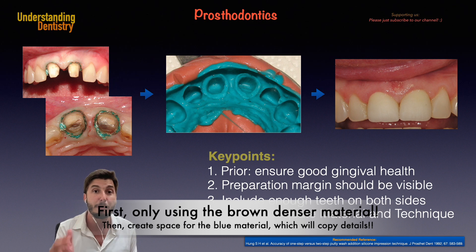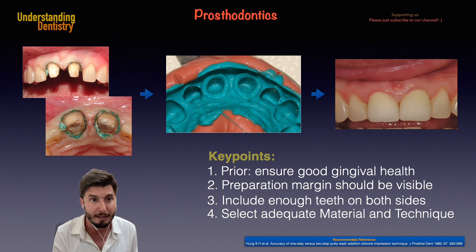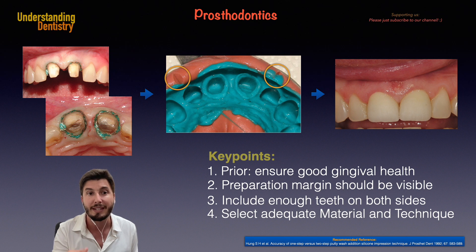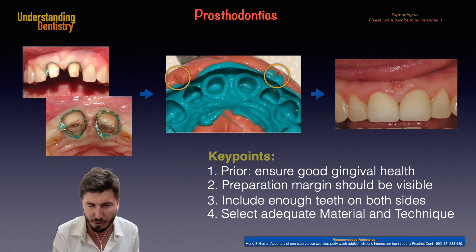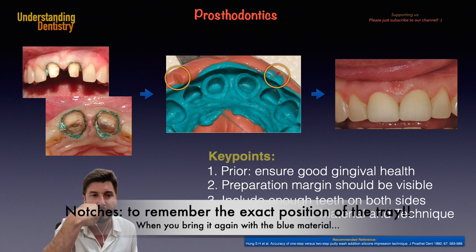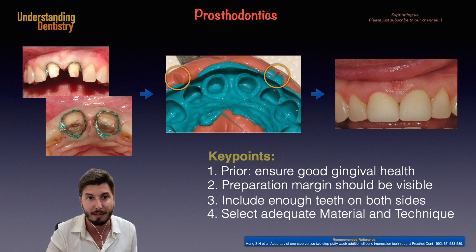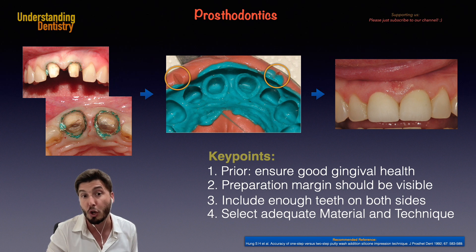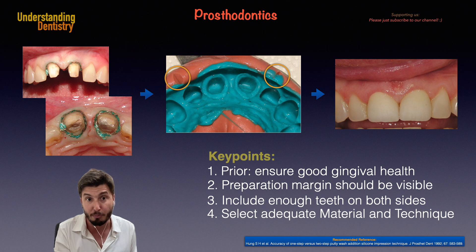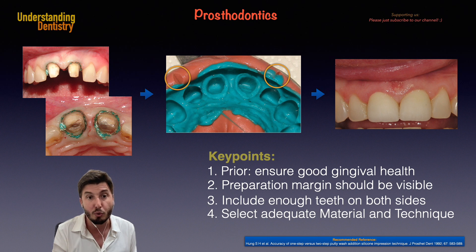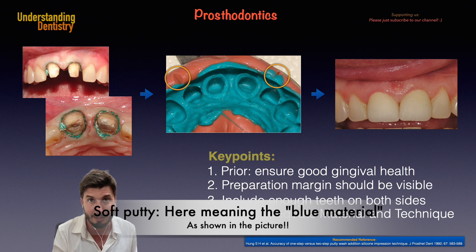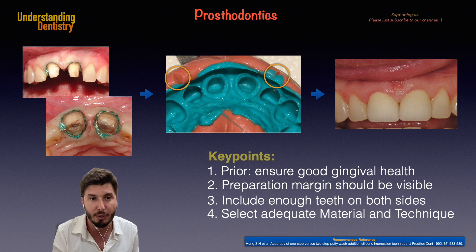In the two-stage approach, first you use the hard putty, then you create some space for the soft putty. You can prepare notches — as you can see in the yellow circle — which help orient the exact placement of the tray in relation to the patient's mouth. This is very useful because you need to come back and insert the tray again in the same position. So if you have a notch at the canine, you return to that same area. First check the quality of the hard putty and the borders of your impression, then use the soft putty to capture the finish line of the preparations, as seen in the picture.